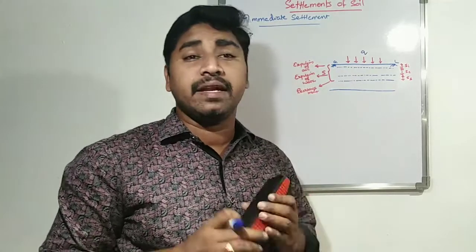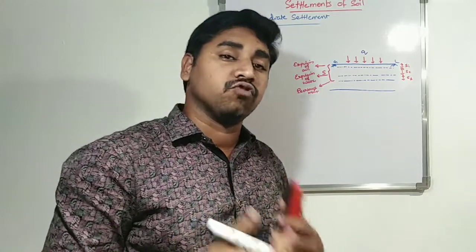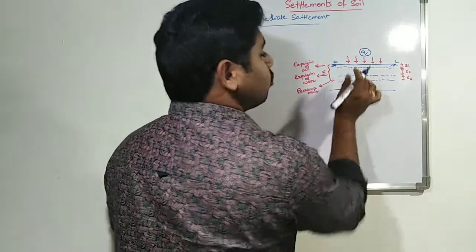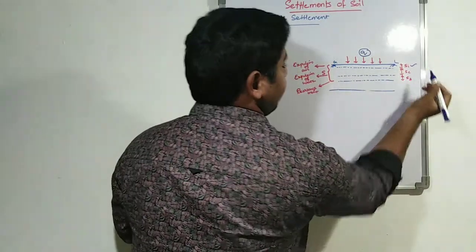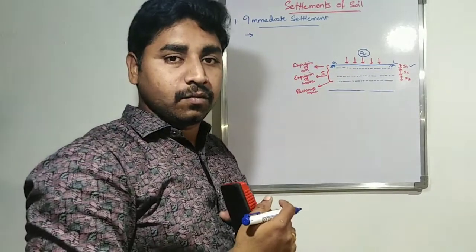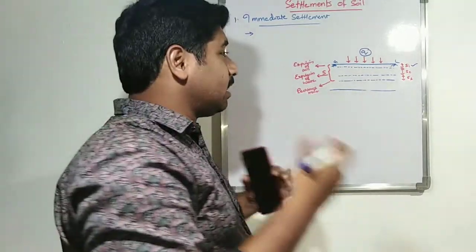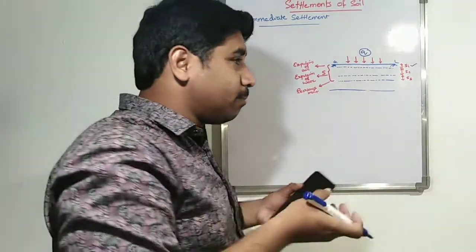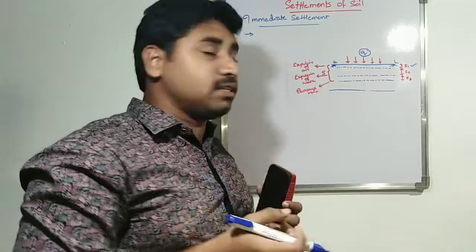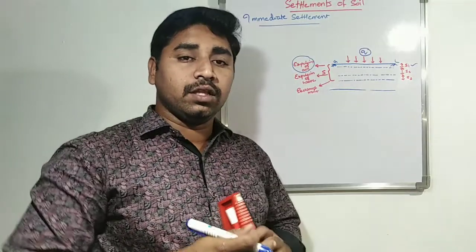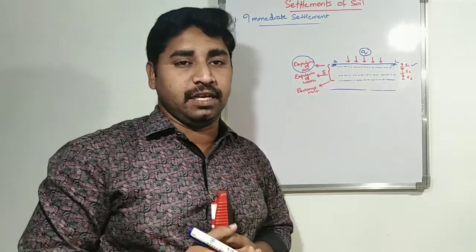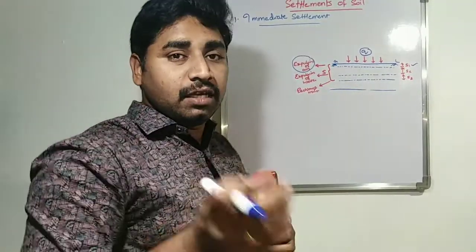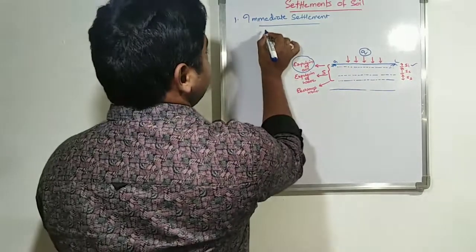Coming to immediate settlement: it is the amount of settlement that takes place instantly on application of load. When we apply a load, immediately there is some amount of settlement in the soil, referred to as SI or immediate settlement. Because of the superimposed load acting instantaneously, there is some reduction in volume, and during this process there is expulsion of air from the voids due to the sudden impact of the superimposed loads, which leads to a reduction in volume.